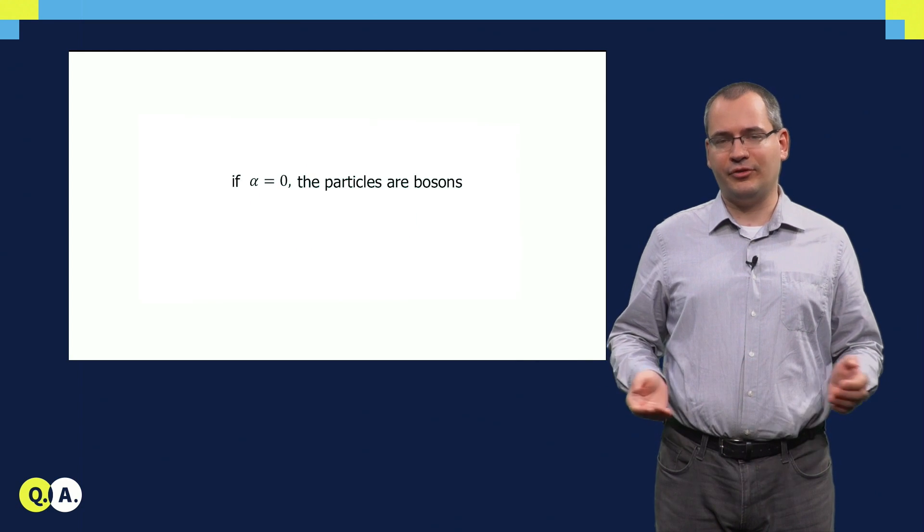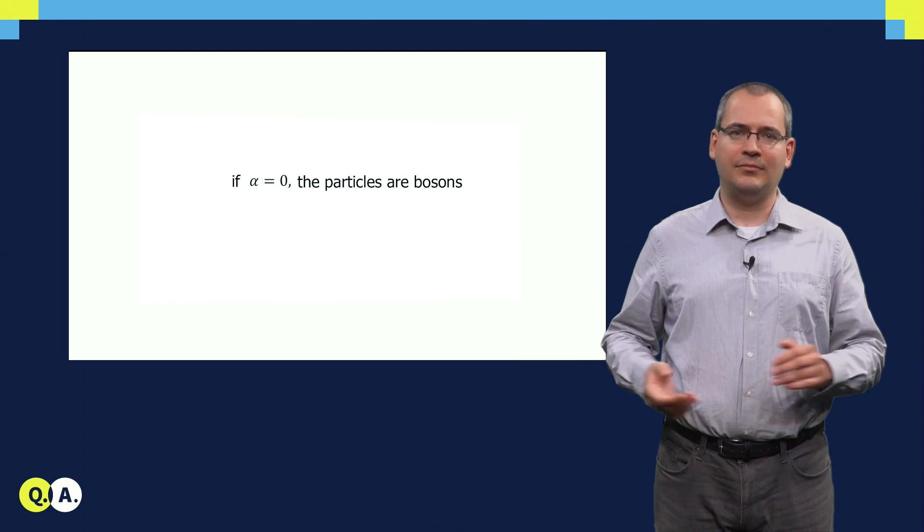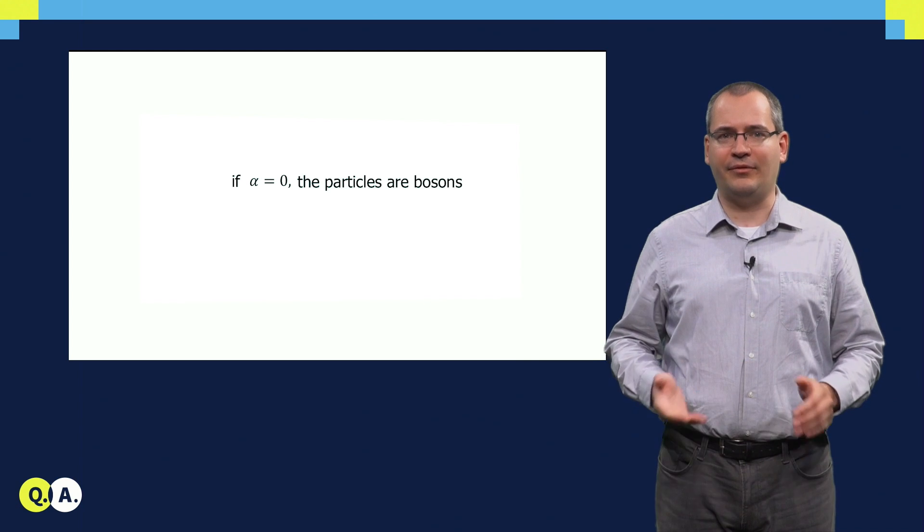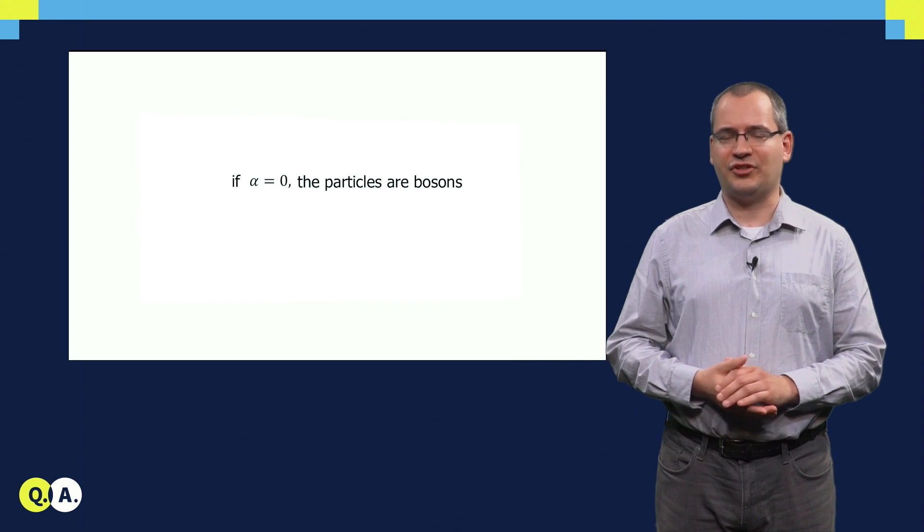It then follows that we only have two types of elementary particles. Alpha is either zero, and after two exchanges we also have zero rotation, the wave function that we started with. This alpha defines bosons, such as photons.